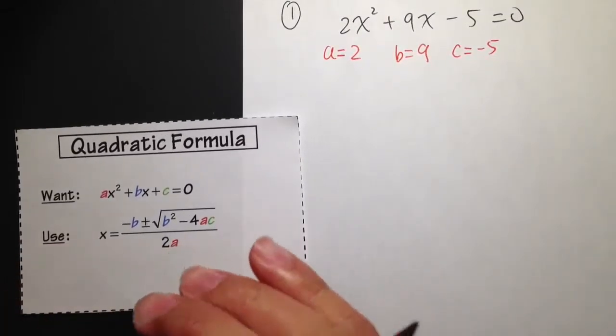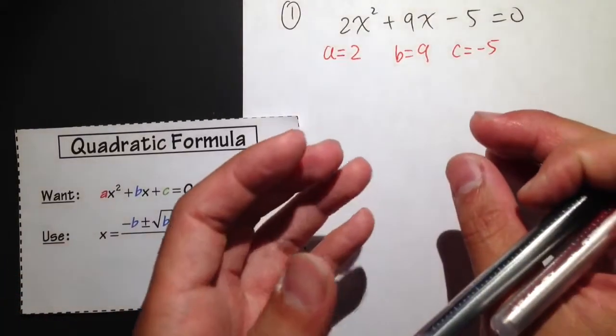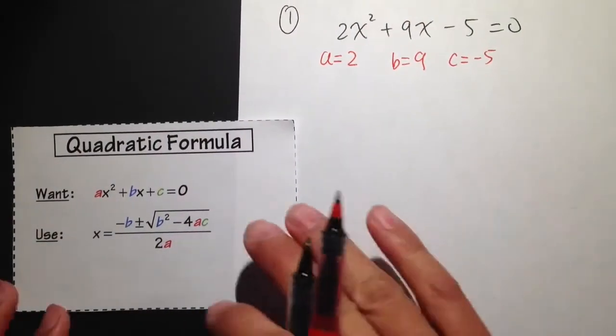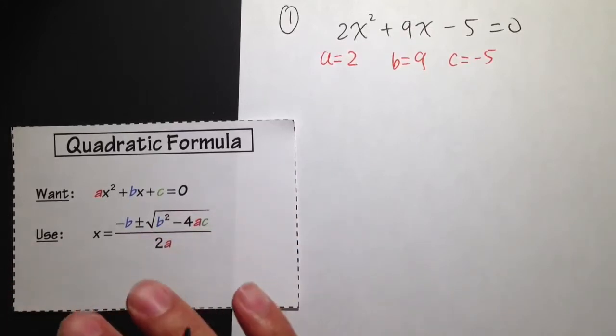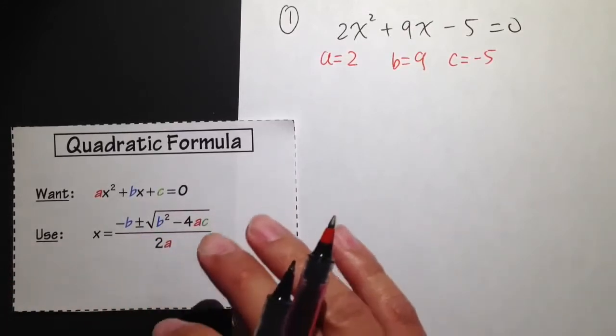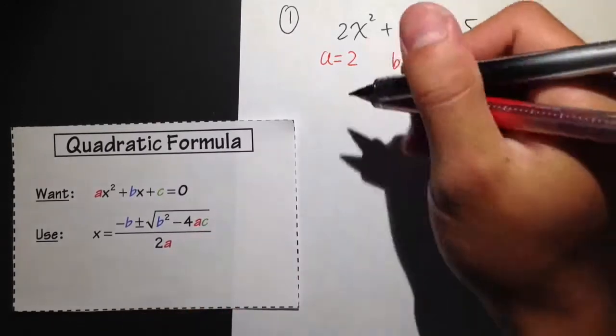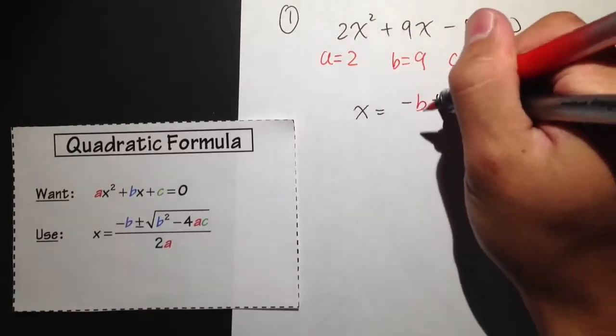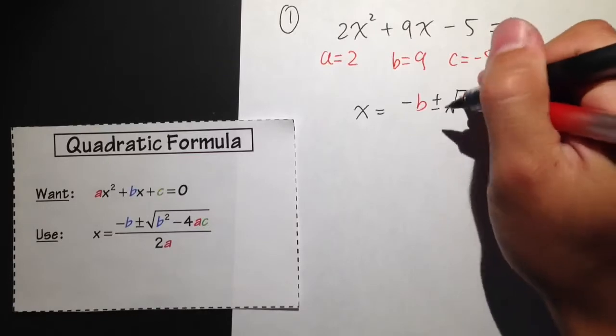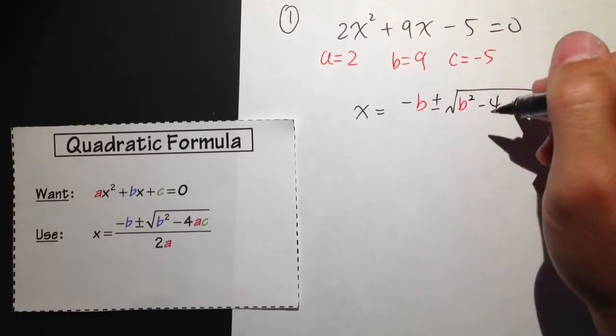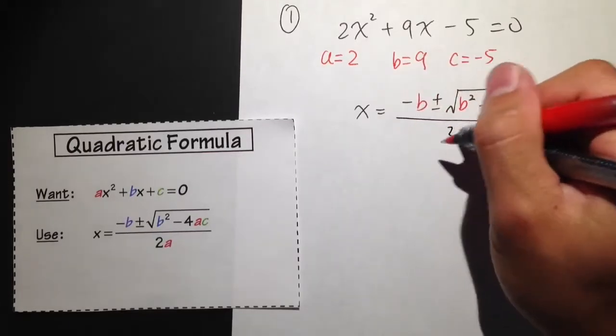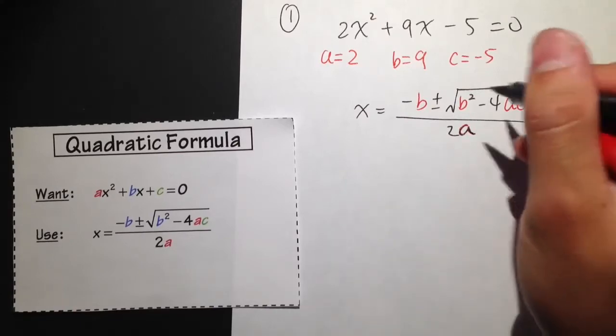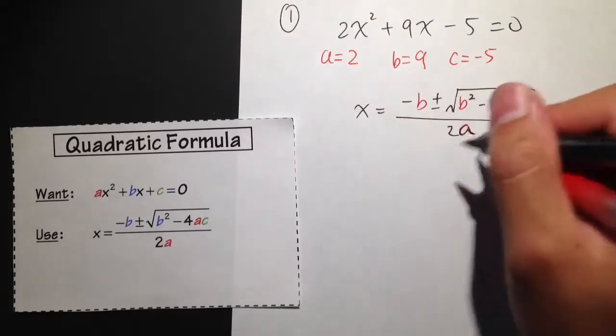Then, we're just going to employ this formula here, and then use it, and then work this out. But on the test, you need to remember not just how to use it, but you also need to remember the formula itself. You need to know that x is equal to negative b plus or minus square root of b squared minus 4ac, everything on the top, over 2a.